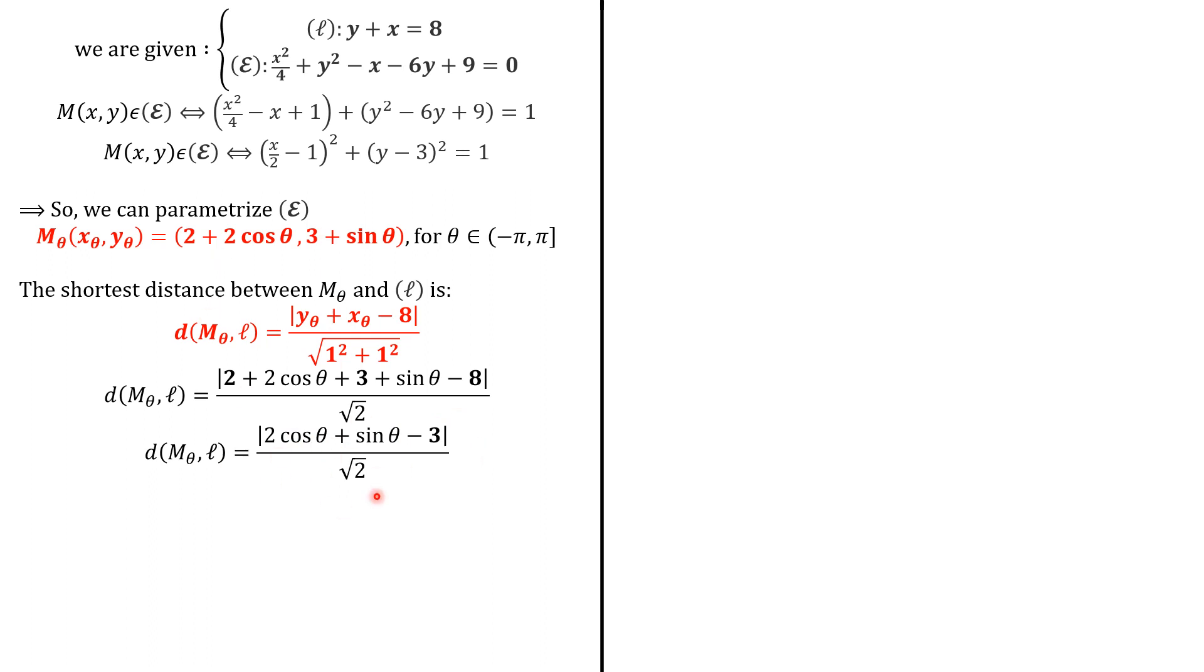What's interesting is that cosine and sine are less than or equal to 1, so 2cos(θ) + sin(θ) ≤ 3. This means the expression is negative, so we know how the absolute value rewrites. We call it f(θ) = (3 - 2cos(θ) - sin(θ))/√2. To find the shortest distance between the ellipse and the line, we should minimize the function f.